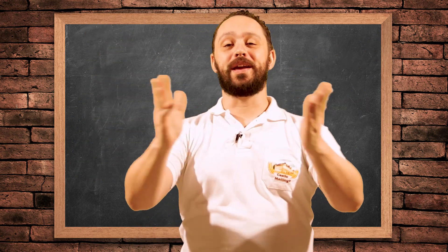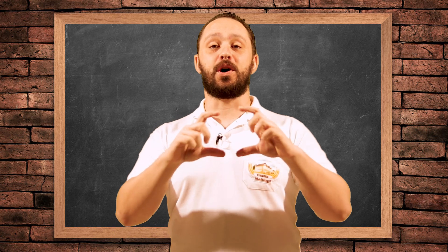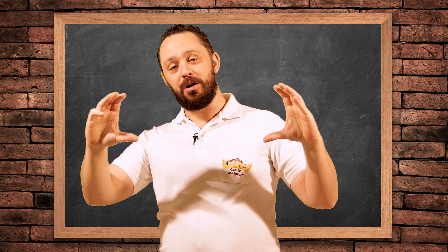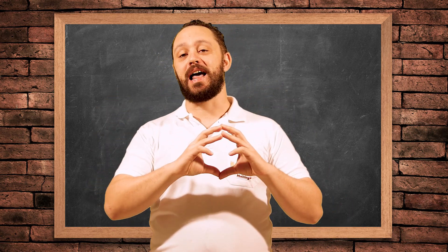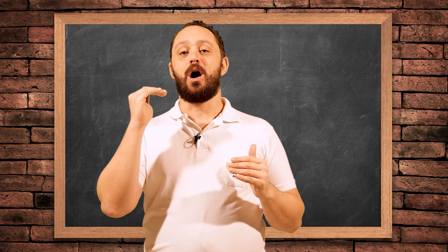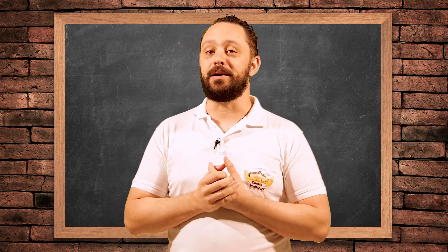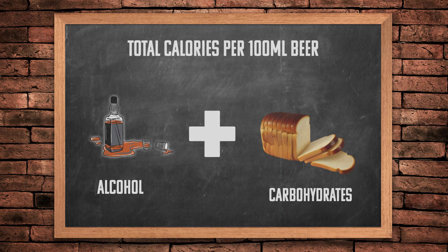Now finally we get to the calorie calculation. We are going to take the total calories from alcohol added to the total calories from carbohydrates, which will give a very accurate estimate of how many calories there are per 100 ml in any given beer. To find the total calories per 100 ml, we have to add the two biggest culprits — the components with the highest caloric value — namely alcohol and carbohydrates.